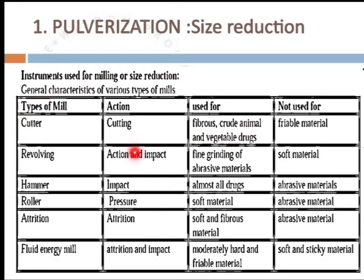Cutters are mainly used for fibrous and crude animal and vegetable drugs. Revolving type mills are used for fine grinding of abrasive materials. Hammer mills are used for almost all drugs. Roller mills are used for soft material. Attrition type mills are used for soft and fibrous material. Fluid energy mills are used for moderately hard and friable materials.